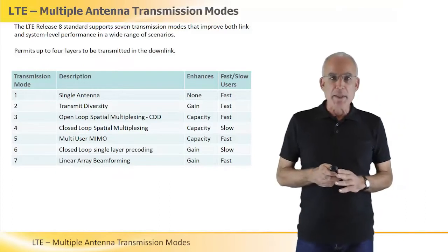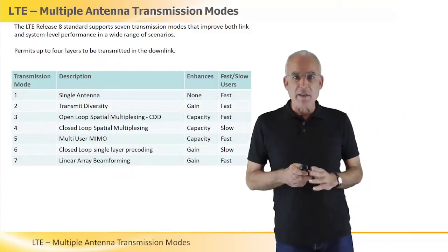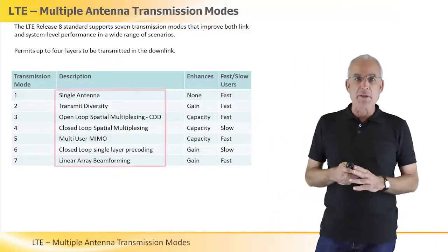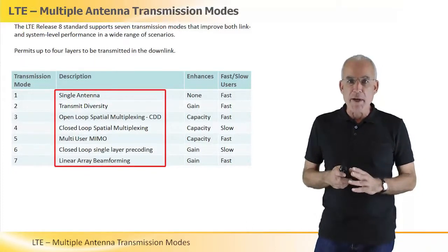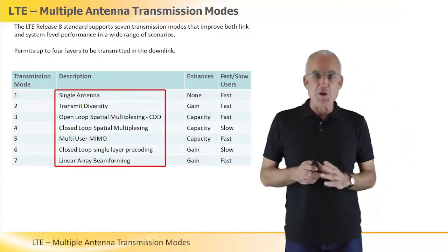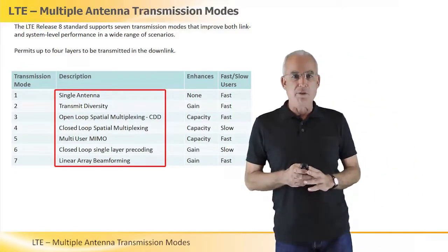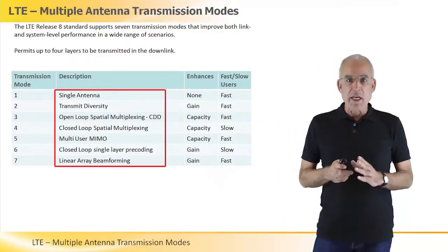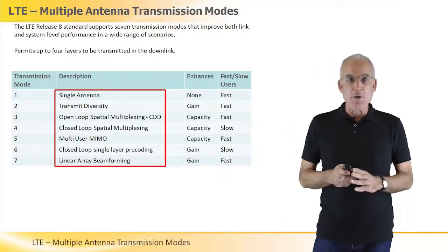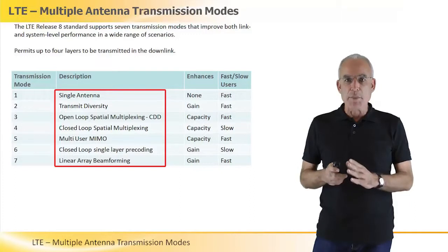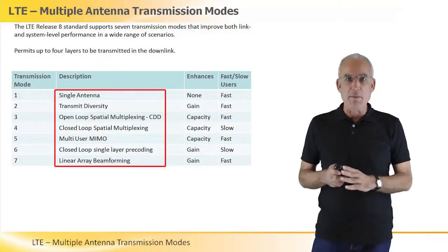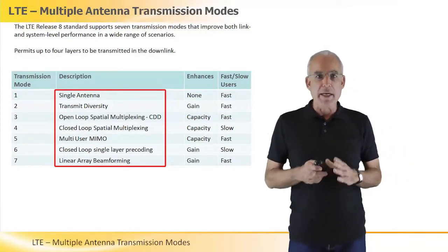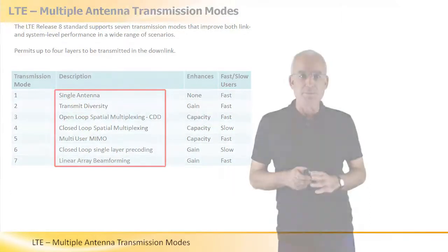The 3GPP Release 8 standard for LTE specifies seven different antenna techniques for a variety of usage scenarios and channel conditions. The EOB scheduler has the capability to optimally select the multiple antenna scheme that best suits the usage scenario and channel conditions per user.